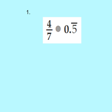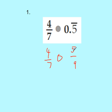Let's take a look at problem number one. We have four-sevenths, and we're comparing that to 0.5̄ — a repeated decimal. What we have to do is convert. I like to change my decimals into fractions and cross-multiply so I don't have to do long division. We know 0.5̄ is 5/9, so comparing 4/7 to 5/9, we cross-multiply: we get 35 and 36.